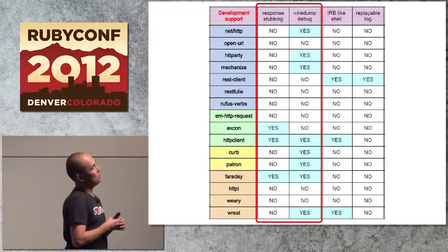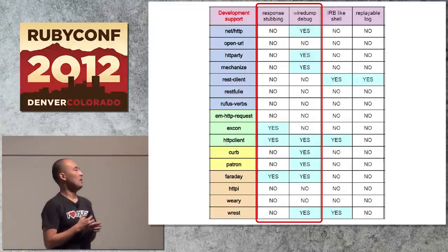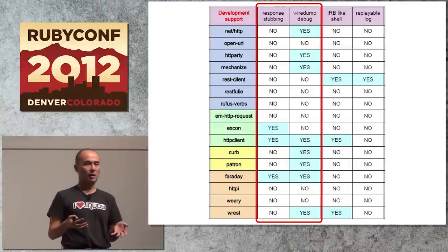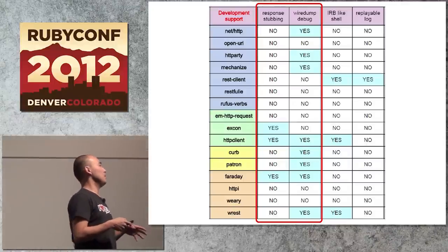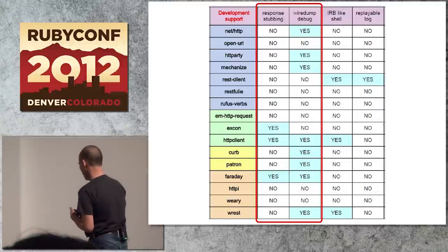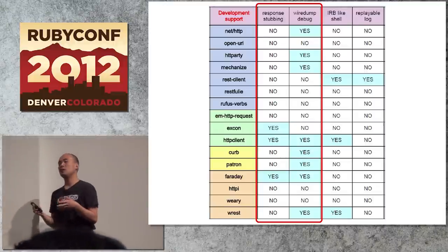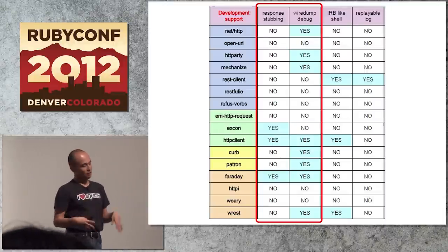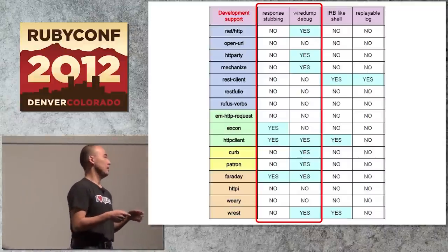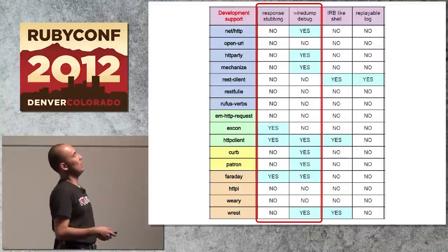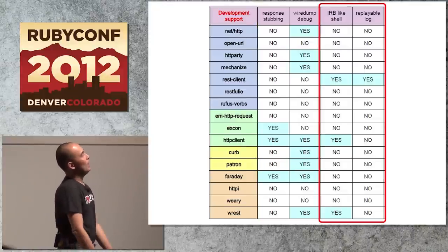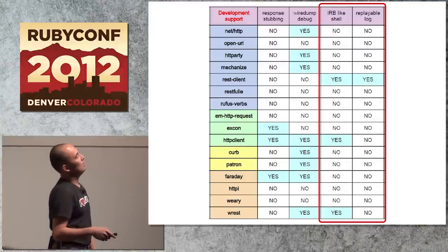Some libraries have a wire dump debug feature that lets you dump the actual HTTP request and response strings to a file. This helps debug situations like when an HTTP server returns a blocking or malformed response. This feature is useful — I believe RESTClient was the first client to offer it.